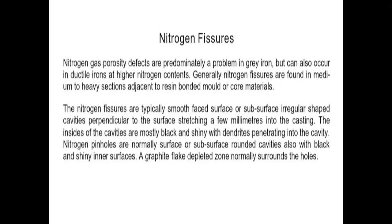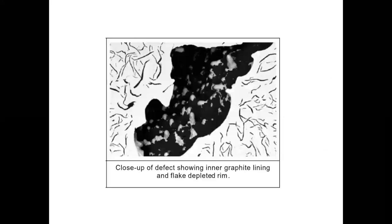Nitrogen pinholes are normally surface or subsurface rounded cavities, also with black and shiny inner surfaces. A graphite flakes depleted zone normally surrounds the holes. You can see the microstructure — a close-up of defects showing inner graphite lining and flakes depleted rim — in this slide.